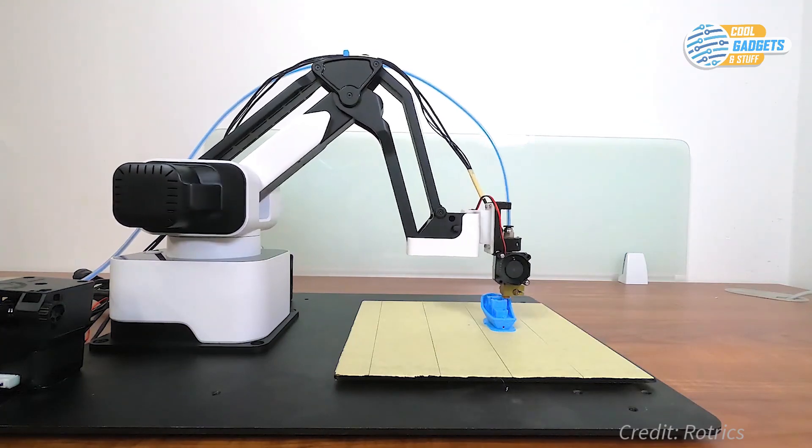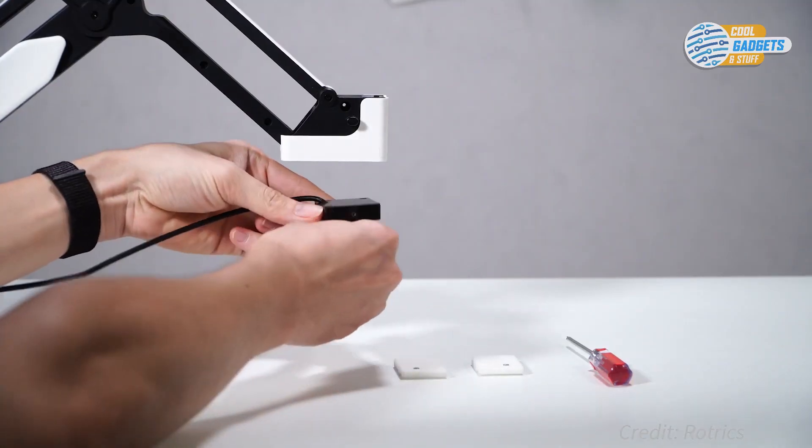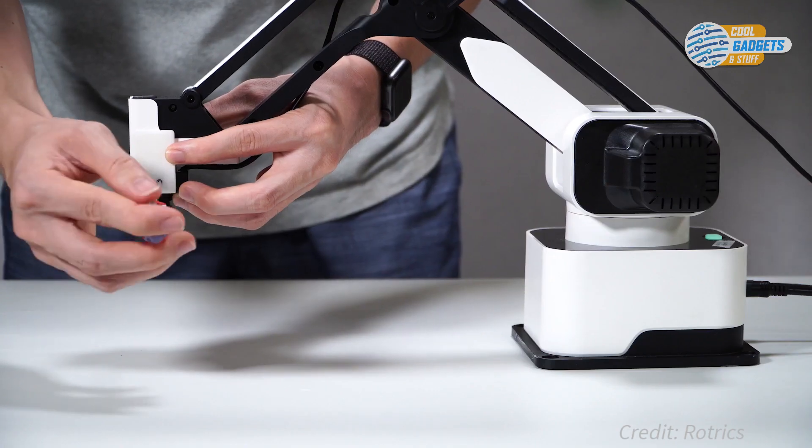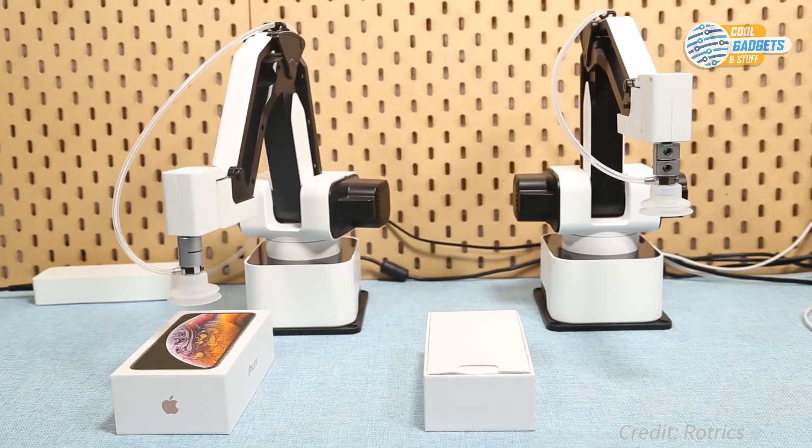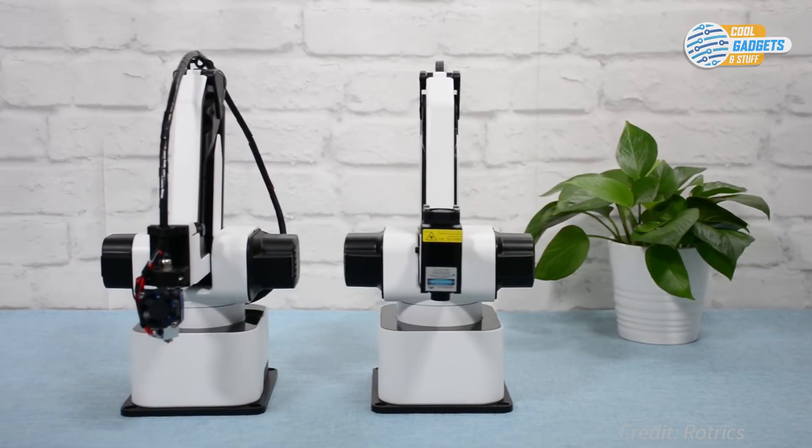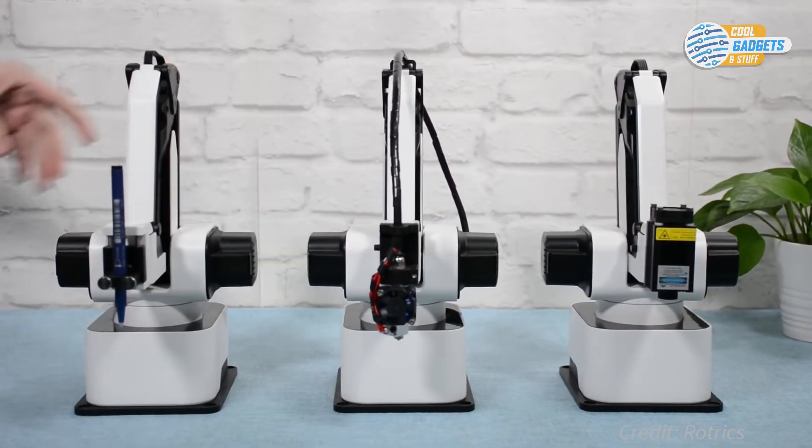With other accessories such as the computer vision kit and linear rails, you can bring the capability of DexArm to the next level. You can choose different DexArm kits depending on the desired modules, usually going from about $600 to $1000.